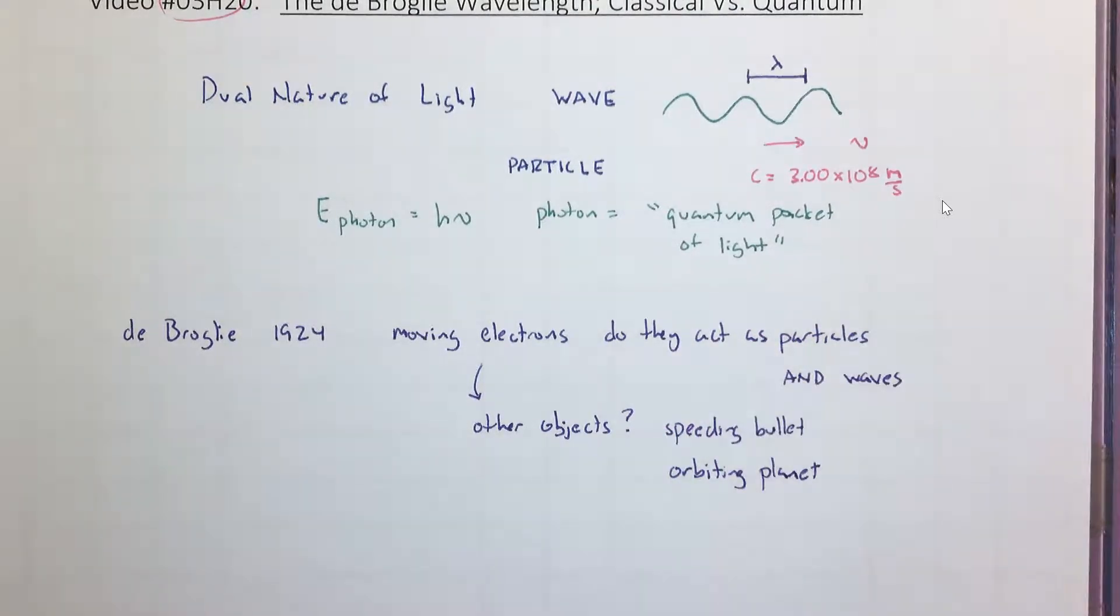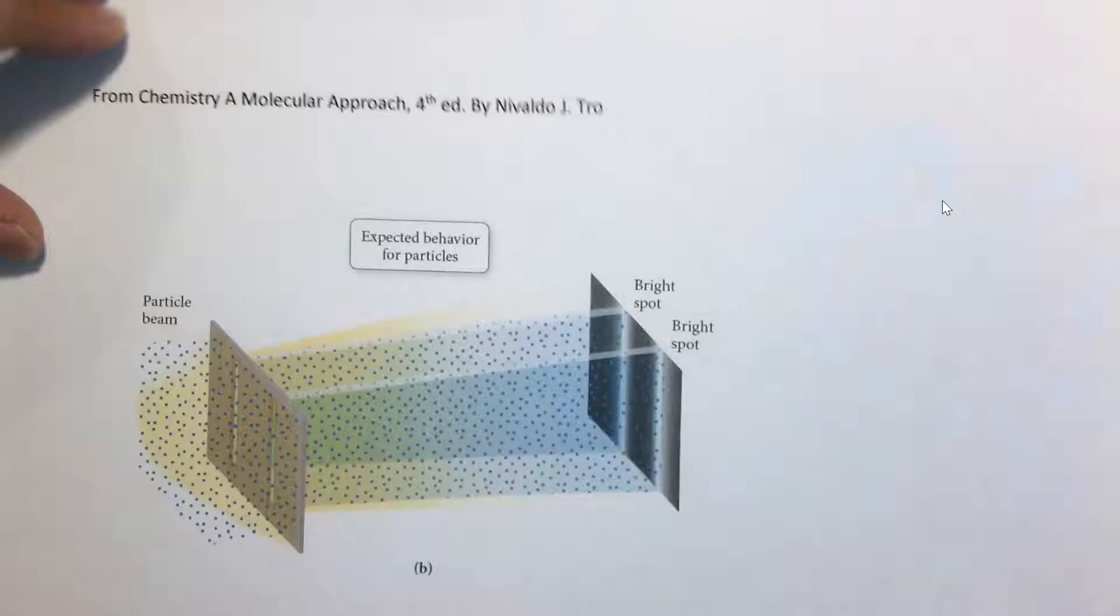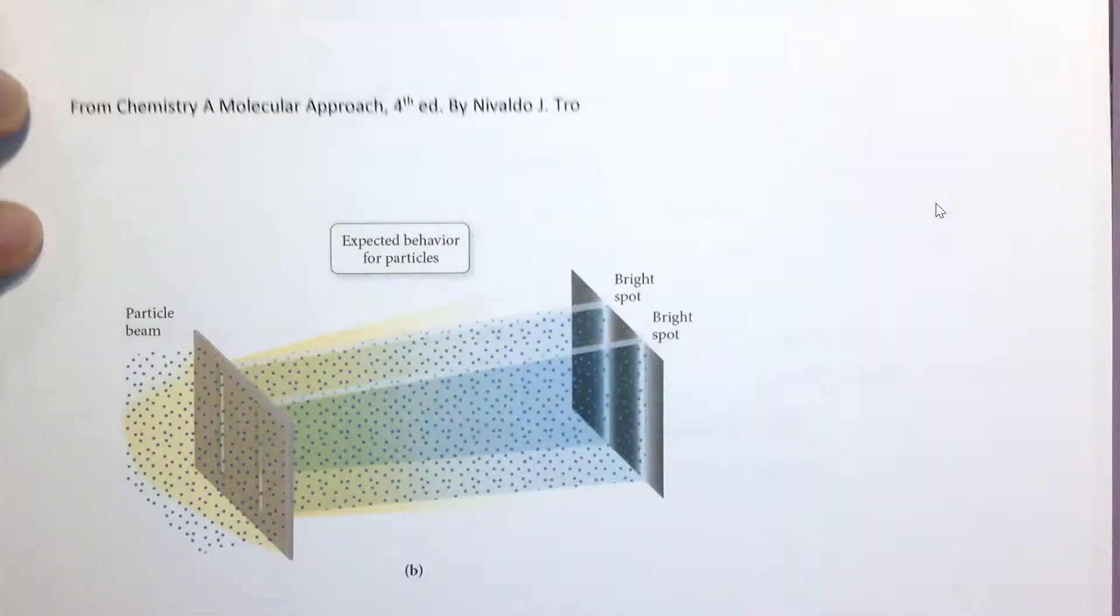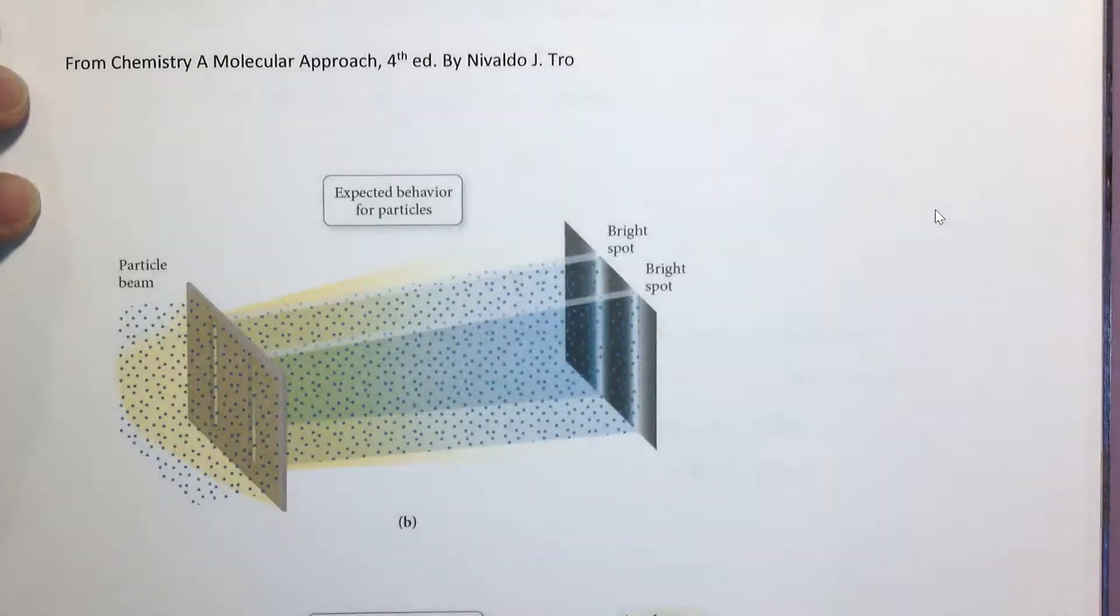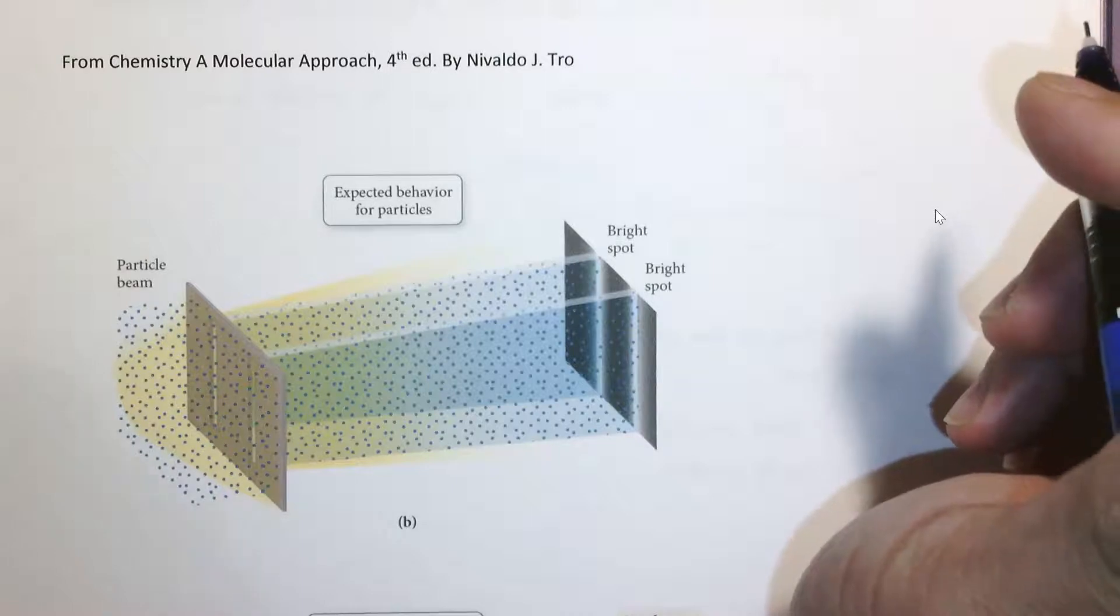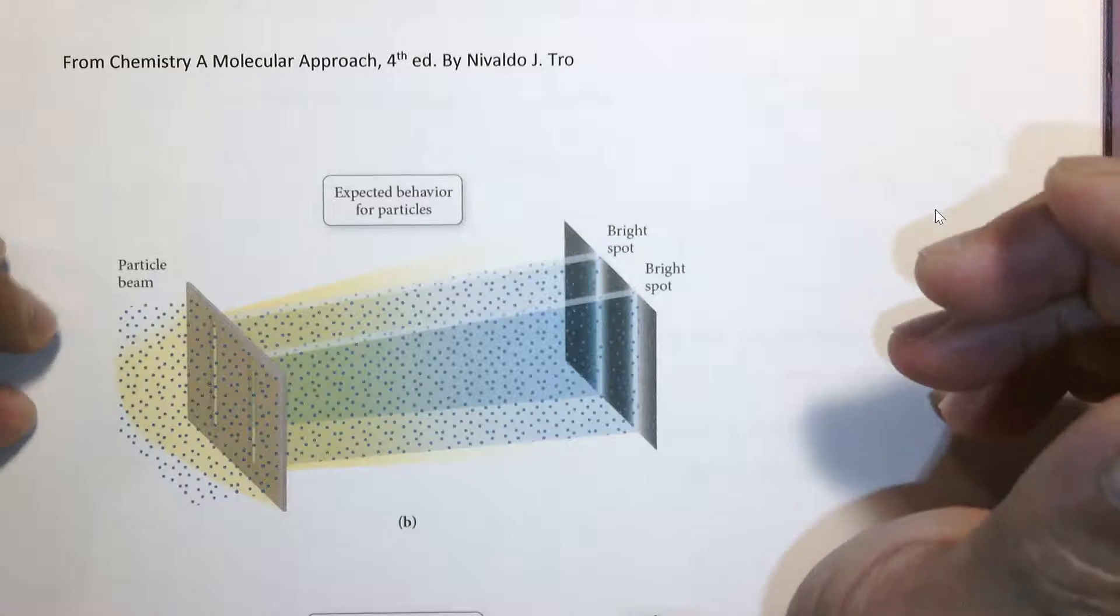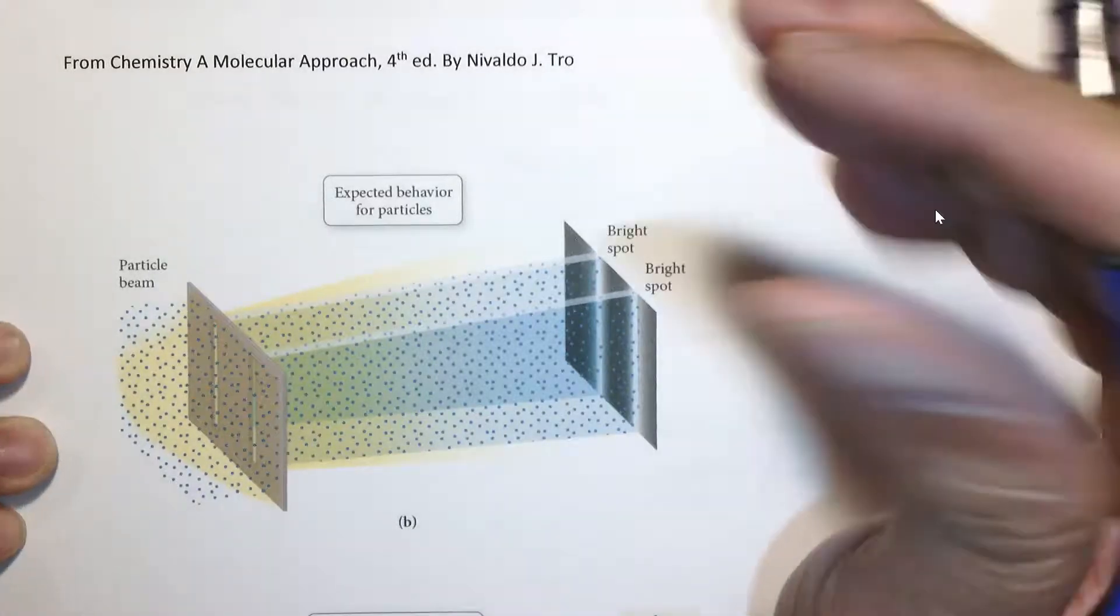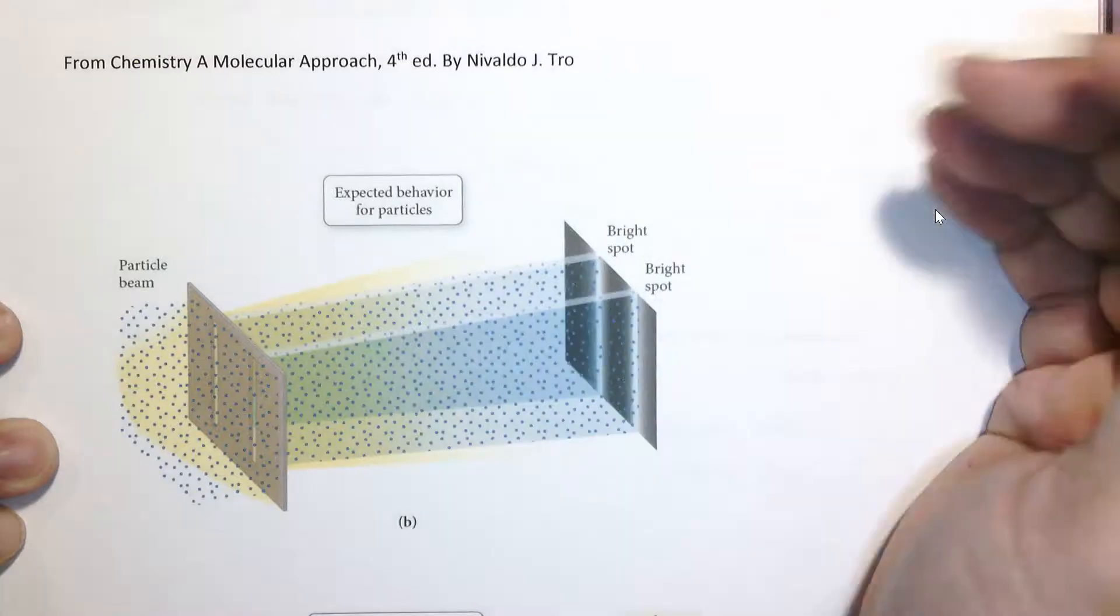So where do I want to go with this? Oh yes. And if we can prove that electrons have wave nature, why not other objects? Larger objects like a speeding bullet or even an orbiting planet? Okay. Well, I want to show two figures. These two figures come from a chemistry textbook by Trow. And we've seen something very similar to this because the light experiment, where you pass light through a slit or a diffraction grating, you will get constructive and destructive interference. And you'll get a diffraction pattern.